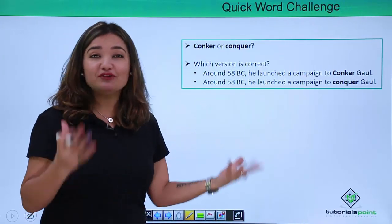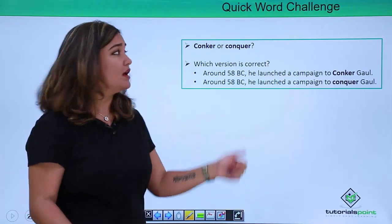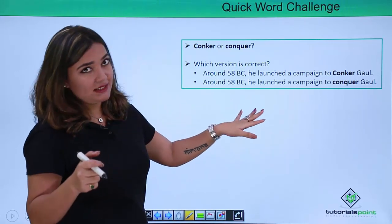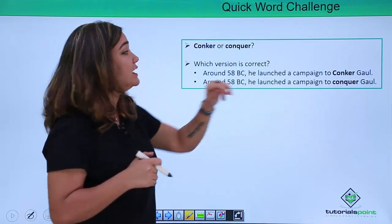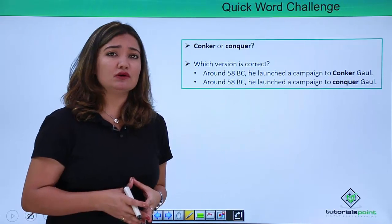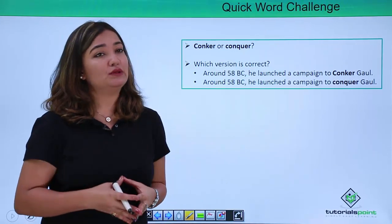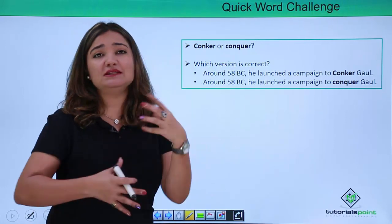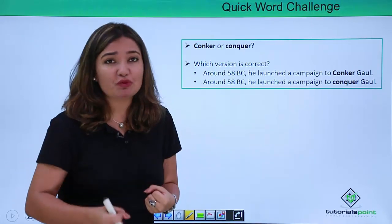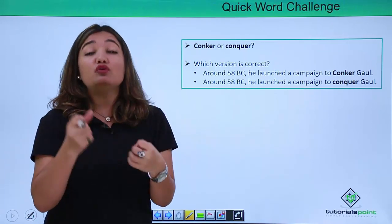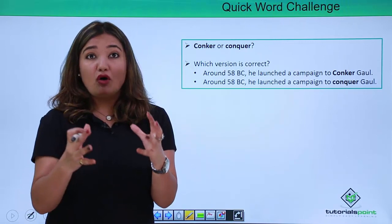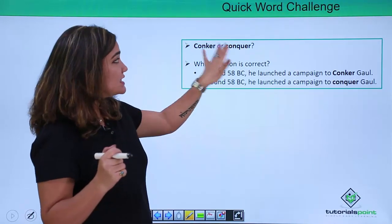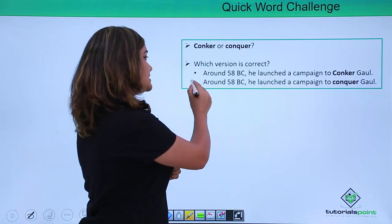Now how about these two words — 'conquer' and 'conker'? The pronunciation is the same but the meanings are very different. Look at the sentence: 'Around 58 BC he launched a campaign to conquer Gaul.' 'Conker' is actually a horse chestnut — a fruit. Whereas 'conquer' means that you have encroached upon something and now conquered it — you've won it, it's yours. So in this context, 'conquer' is the right choice, making this sentence correct.